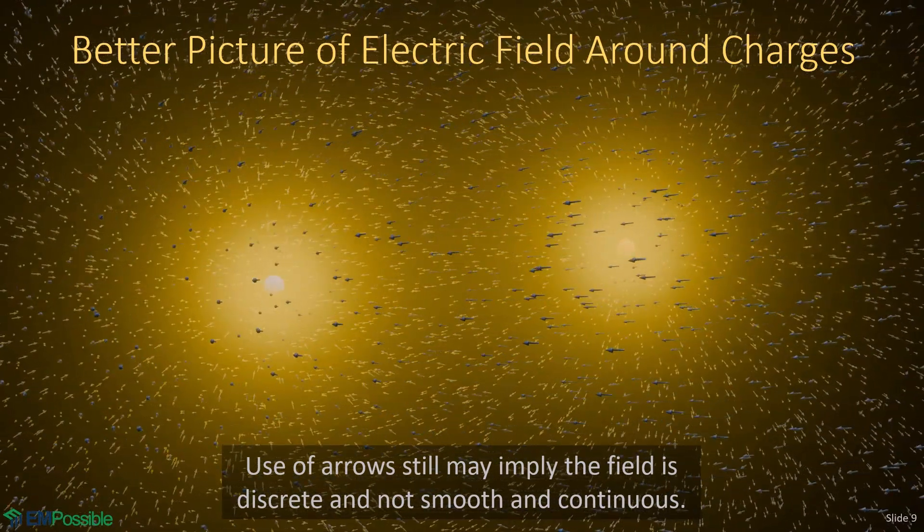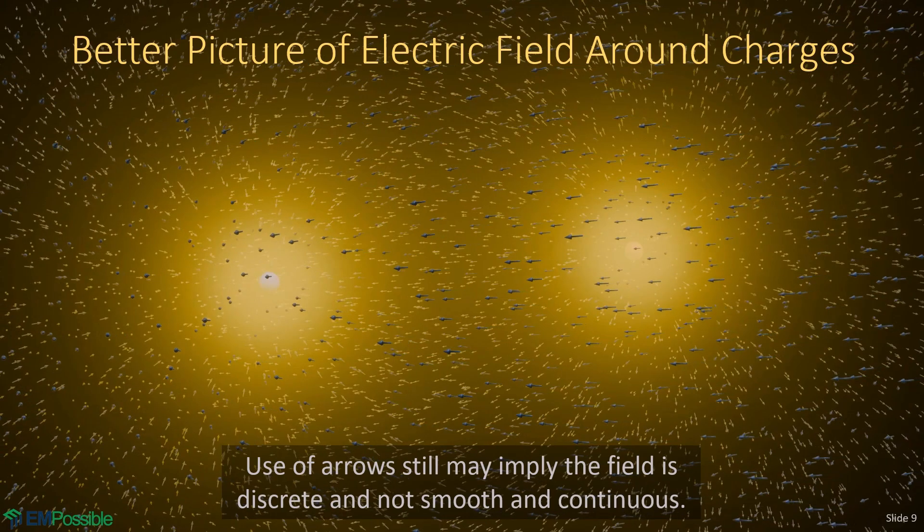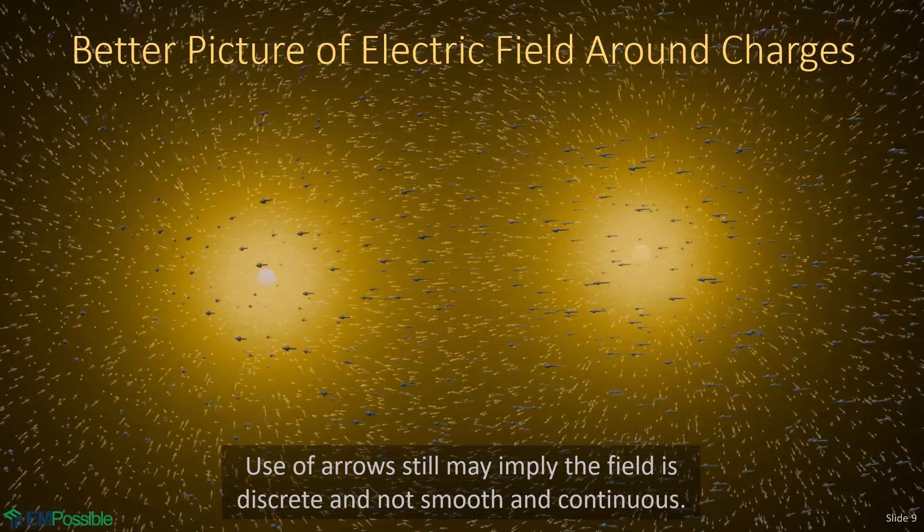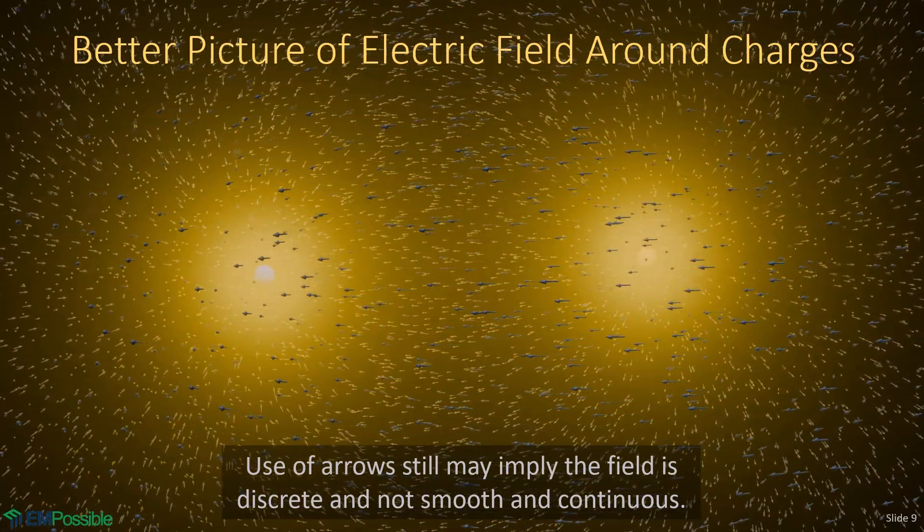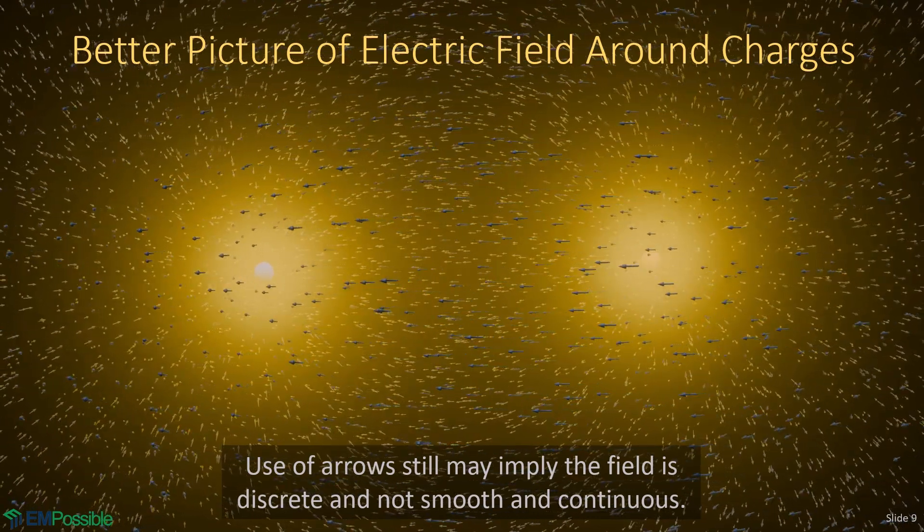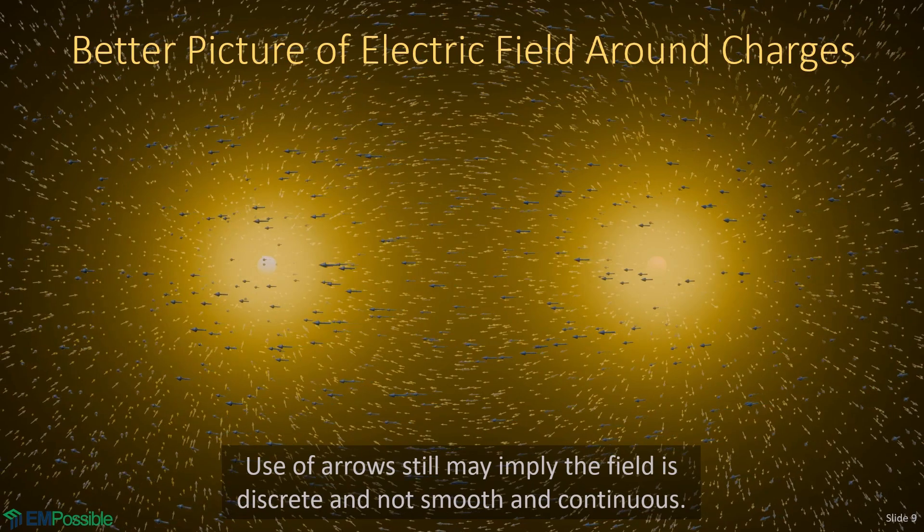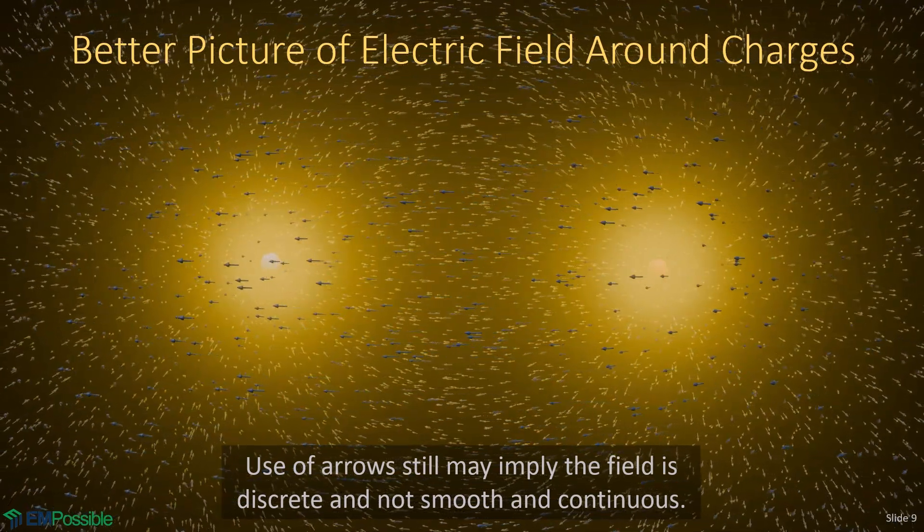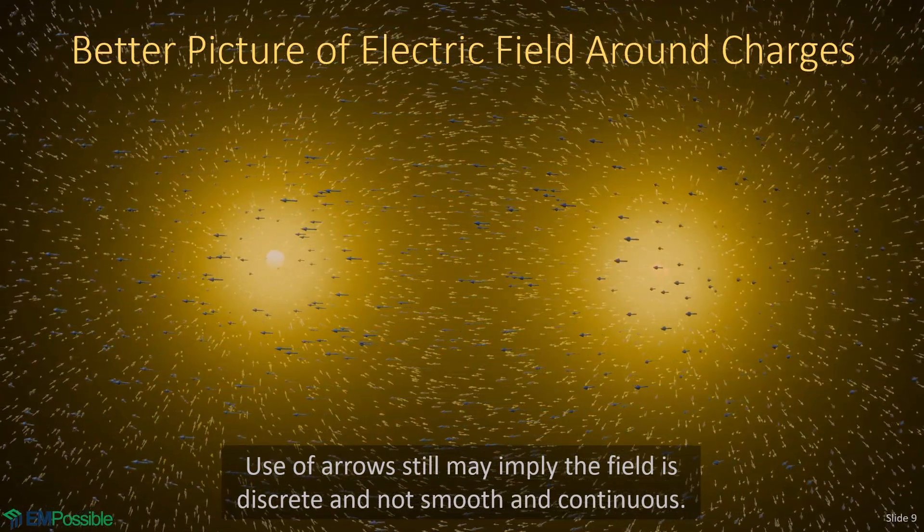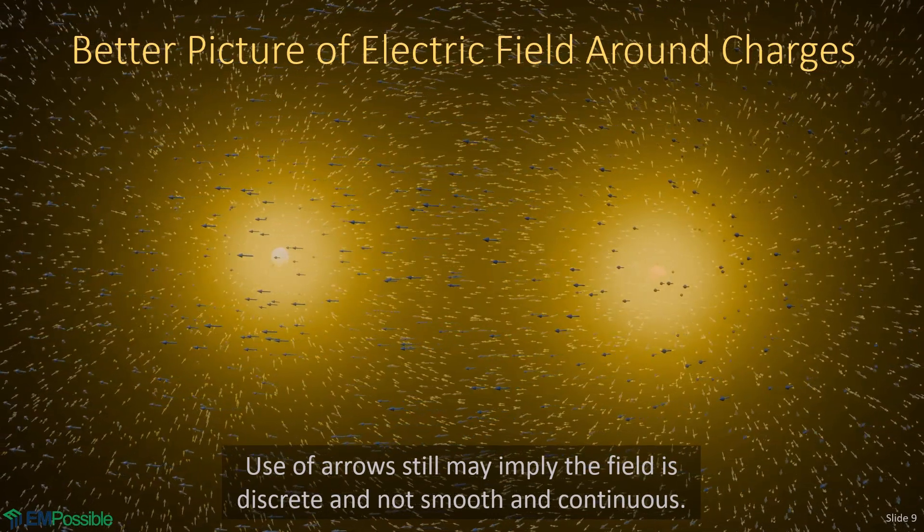Here is my best attempt to show the electric field around the same two charges we showed a few minutes ago. The blue sphere on the left represents a negative charge and the red sphere on the right represents a positive charge. The glowing yellow is representing the magnitude or the strength of the electric field, and that's smooth and continuous. It does a very good job of that, and the arrows are showing the direction.